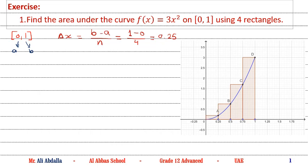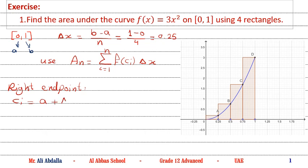Then we need to use the area formula: summation of i = 1 up to n of f(c_i)·Δx. If we use the right endpoint, we must find c_i. c_i = A + Δx·i = 0 + 0.25i. Then c_i = 0.25i or we can write it as (1/4)i.